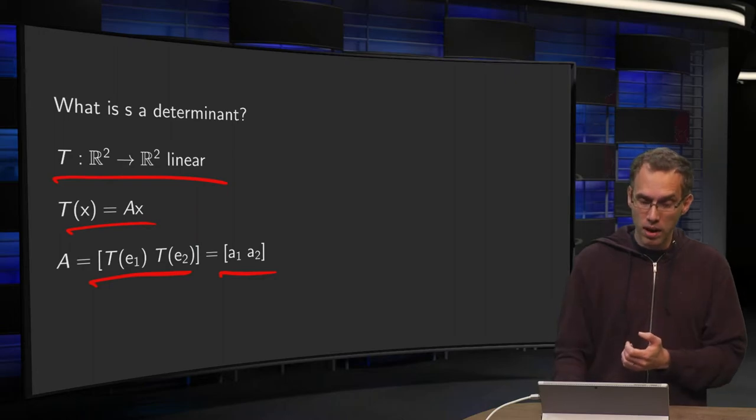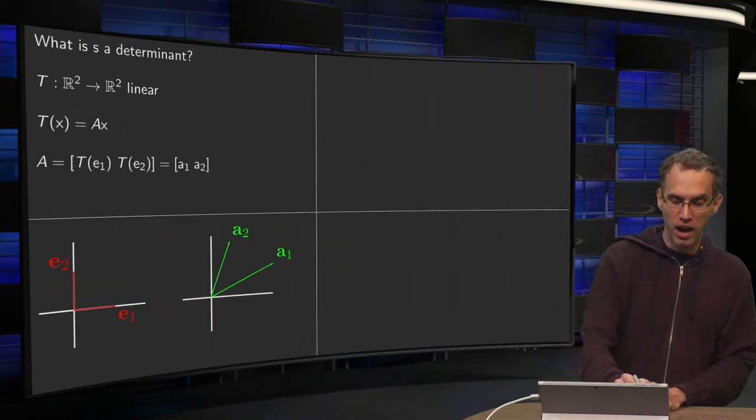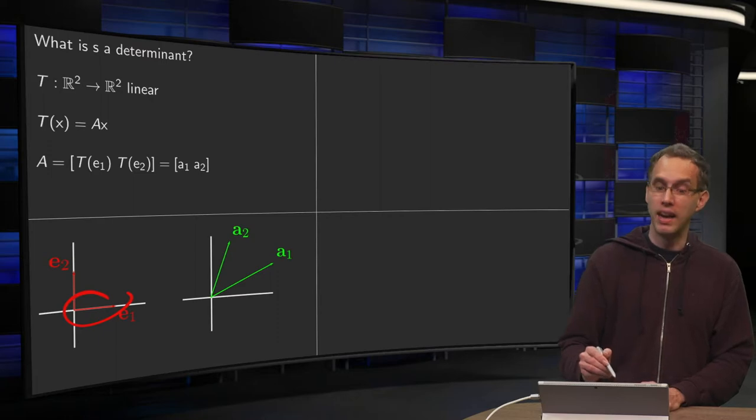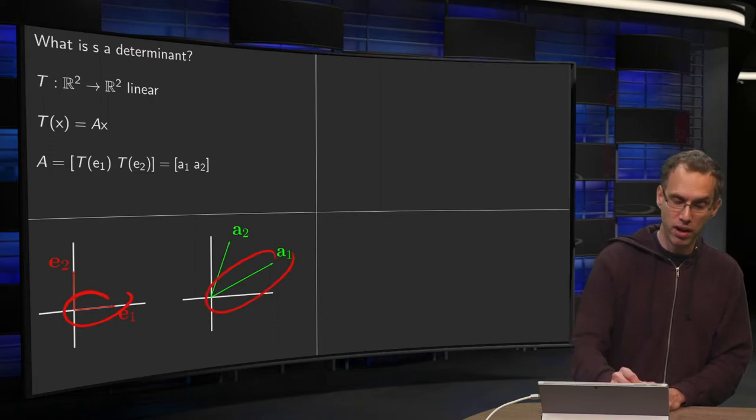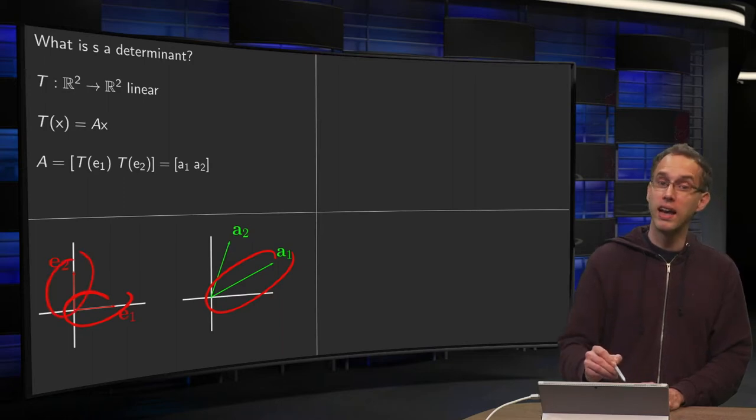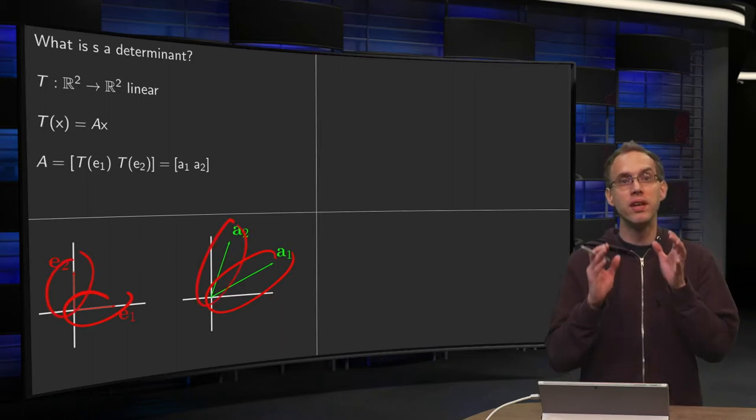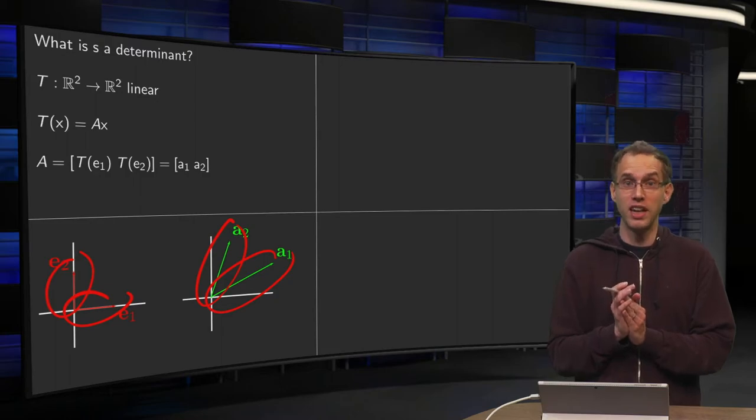So, how does that look in a figure? We have E1 and the image of E1 equals A1. And we have our unit vector E2 and the image of E2 is A2. So that's how we form our matrix A.